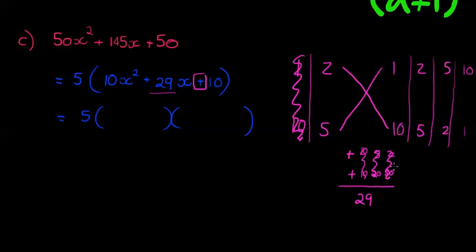How about 2 and 10? 2 and 10 gives me 20. 5 and 1 gives me 5. So that gives me 25, not 29. Okay. So this one didn't work with either one. 2 and 5 gives me 10. 2 and 5 gives me 10. Okay. 10 and 10 gives me 20. This one also didn't work.